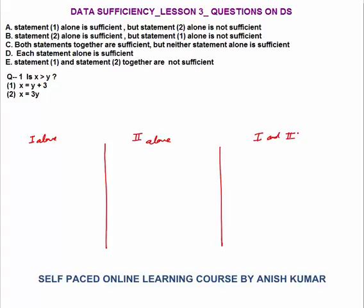Question 1 says: is x greater than y? The equation is x equals y plus 3. You can take one positive value, one negative value to check, or straight away you can say that x minus y equals 3. The difference is 3, which means x is automatically greater than y, whether x is positive or negative.